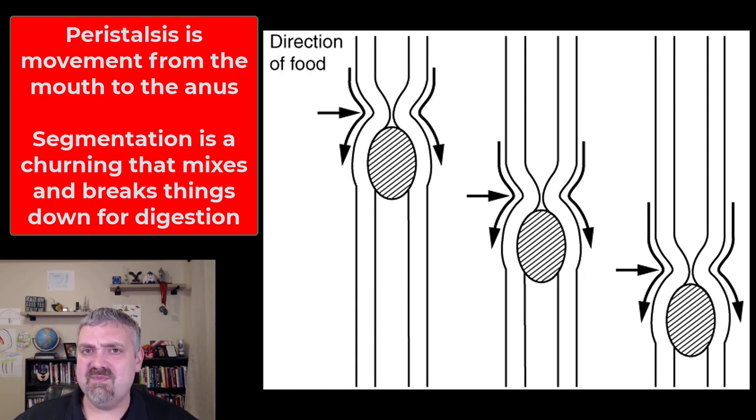Segmentation involves somewhat similar smooth muscle contractions, but it's occurring on both sides of whatever is inside your gut. So it's going to cause a mixing. So propulsion, think movement forward from the mouth to the anus. Segmentation, think mixing.